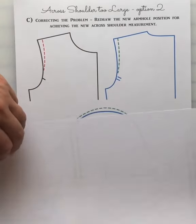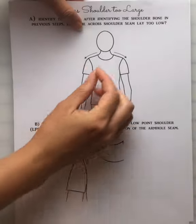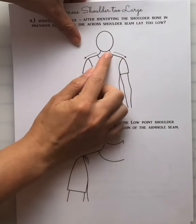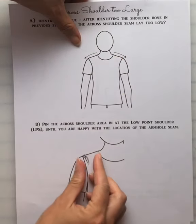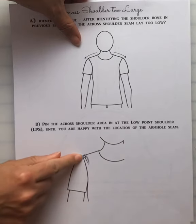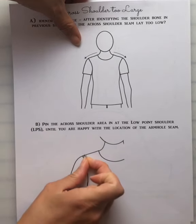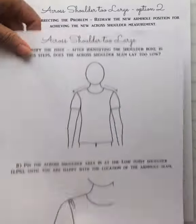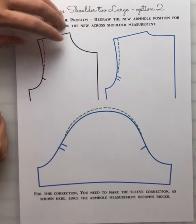Now I want to show you a second option. So if your shoulders are just too wide, they're sitting too far down, you've pinned it to see how much you want to move that armhole up. So we've pinned that amount and we've measured that amount and then we simply take it off.